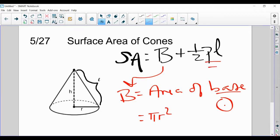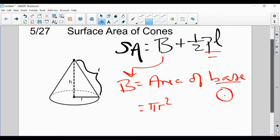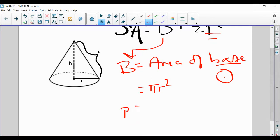P is the perimeter of the base, and since it's a circle, the perimeter of the base is always going to be the circumference. So that is going to be 2 pi r.